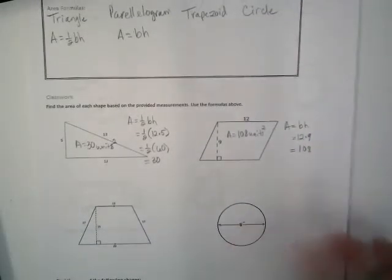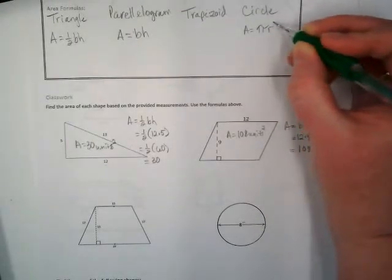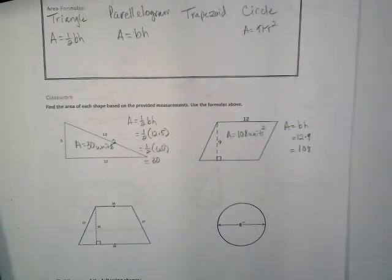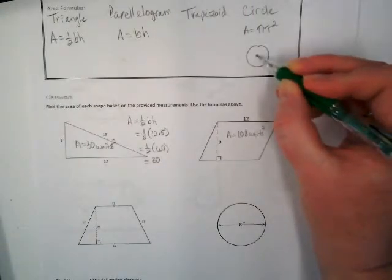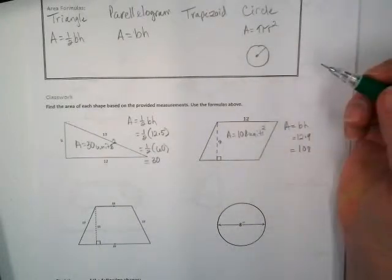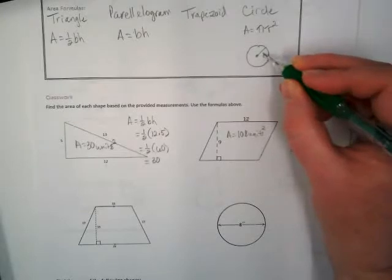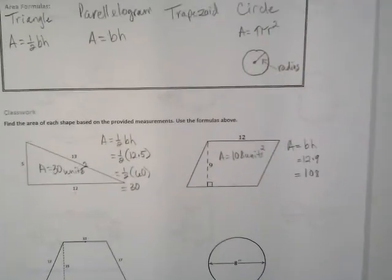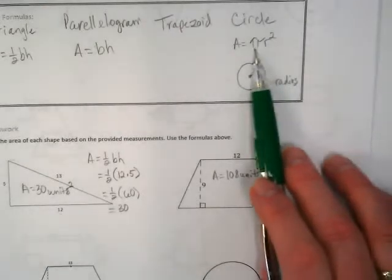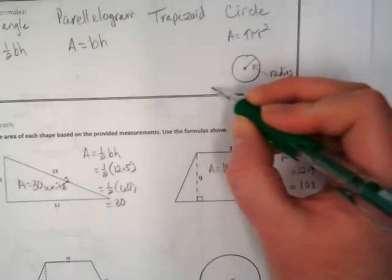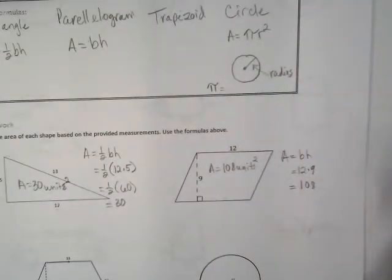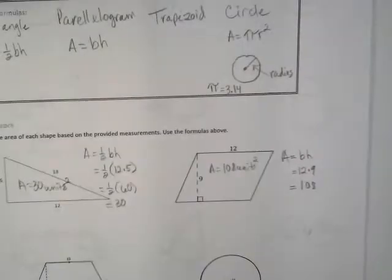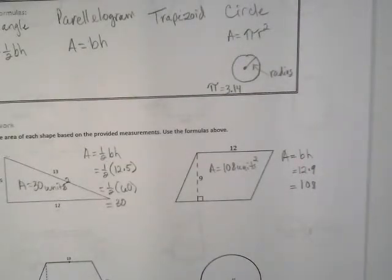Area of a circle is pretty simple. It's pi times the radius squared. The radius is always that measurement that goes from one side of the circle to the center. Pi, the number that we use when we're actually calculating this, we use 3.14. It goes on forever, but for rounding's sake, we just use 3.14.